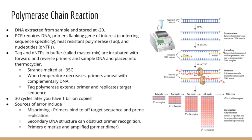Primers are designed to be complementary to the five prime and three prime flanking sequences of the genetic location of interest you want to amplify — this is called the amplicon, usually a 100 to 300 base pair genetic sequence. So if you wanted to amplify a particular gene, you would make a primer complementary to the five prime sequence and the three prime sequence on the other strand. A lot of work goes into perfecting these primers, and there are many web resources to help researchers generate the right primers.